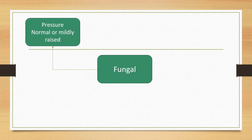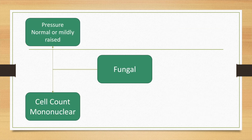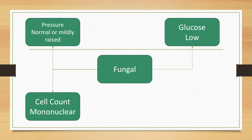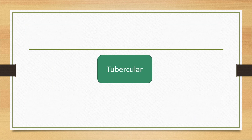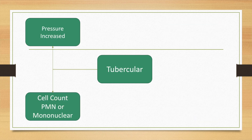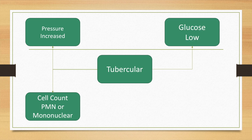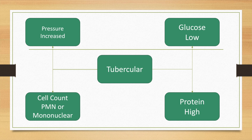In fungal meningitis, the pressure may be normal or mildly raised, there is lymphocytic mononuclear pleocytosis, the glucose is low, and the protein is high. In tubercular meningitis, the pressure is increased, the cell count is predominantly lymphocytic, the glucose is low, and the protein is often very high — high enough to form a coagulum, also known as the cobweb appearance.